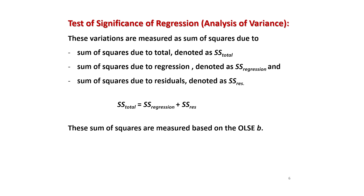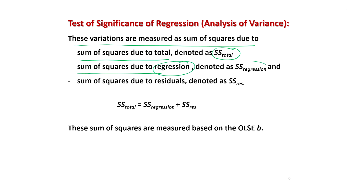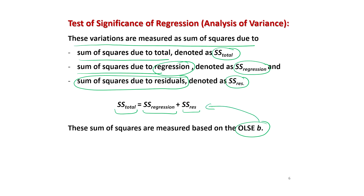Without going into full mathematical detail, I will provide all possible steps, the interpretation, and implementation in R software. These variations are measured as sum of squares: SS Total, SS Regression, and SS Residuals. This is an orthogonal partition, so SS Total = SS Regression + SS Residuals. These sum of squares are obtained using the ordinary least squares estimator b — that is most important.